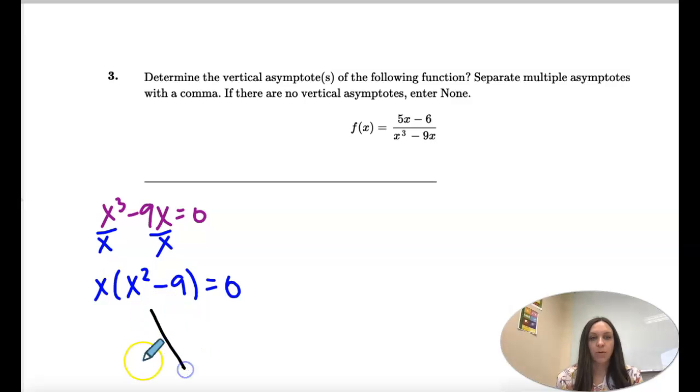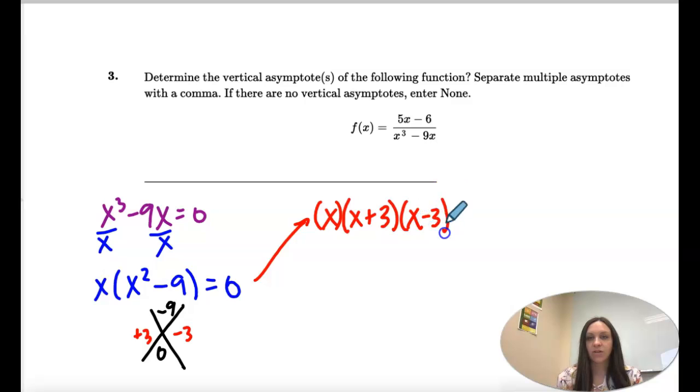So remember, we have an x squared with nothing in the middle, so we want two numbers that multiply to negative nine, but add to zero, and that's what we call our perfect squares, negative three and positive three. So factored form is this x, that's a factor, and then x plus three, x minus three.